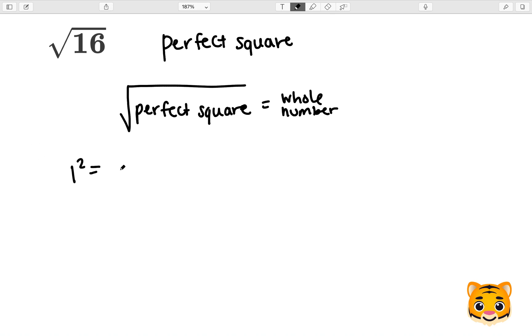Examples include 1 squared which is 1, a perfect square. 2 squared equals 4, which is a perfect square. And 3 squared equals 9, which is a perfect square.